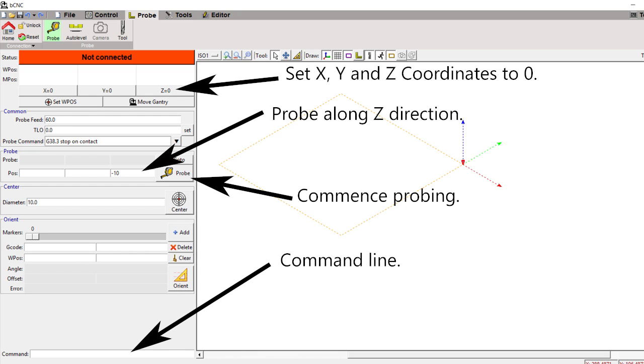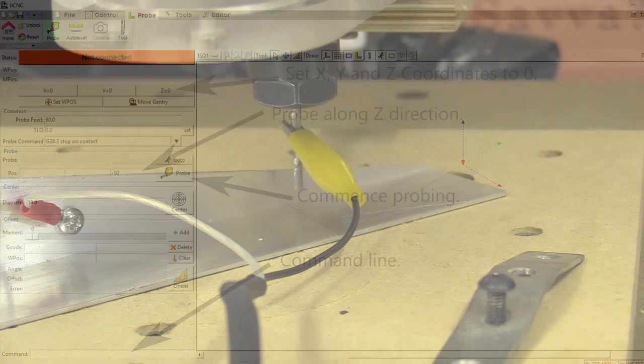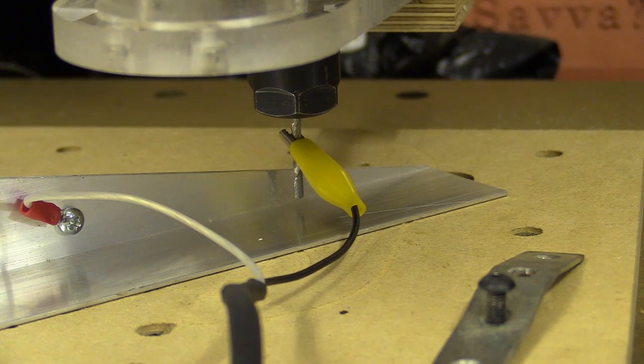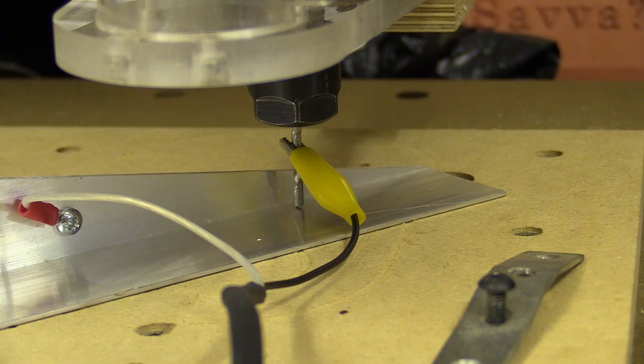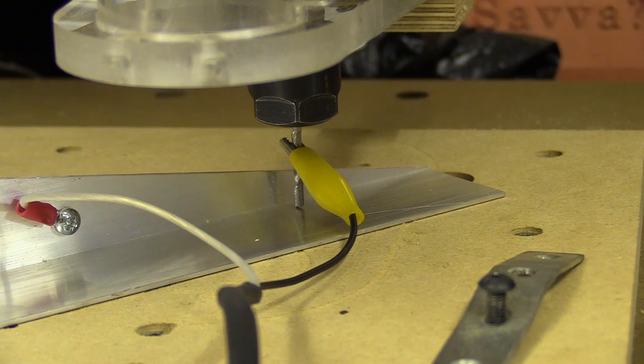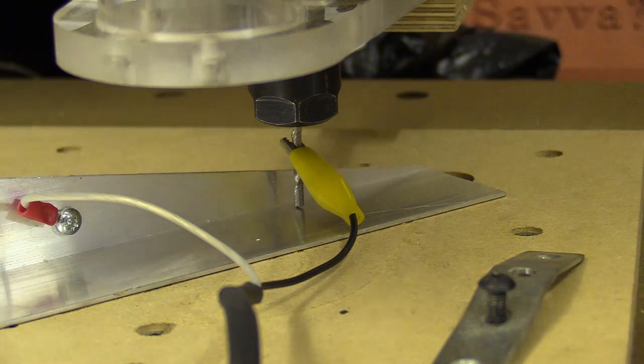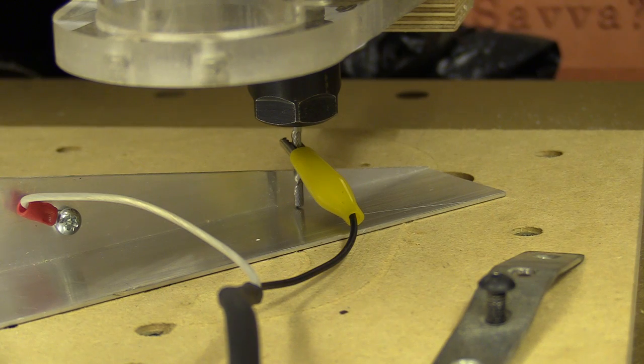I made sure the touch blade hadn't moved away from the soon-to-be incoming bit. I pressed probe, and once they made contact and stopped, I typed the command G92Z1.5 into the command line. G92 sets the position of the bit end, and Z1.5 is the thickness of the touch plate along the Z axis.